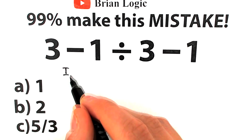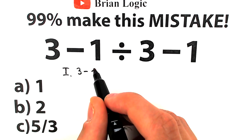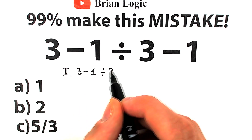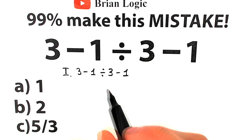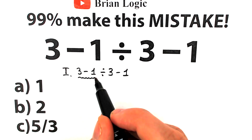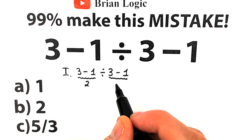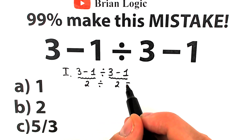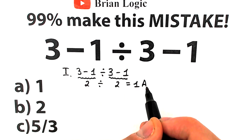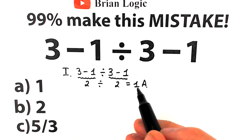So here's our first interpretation. The first type of students solves this question like this: we have 3 minus 1 on the left-hand side, which equals 2, and 3 minus 1 on the right-hand side, which also equals 2. So 2 divided by 2 equals 1 — that's option A.